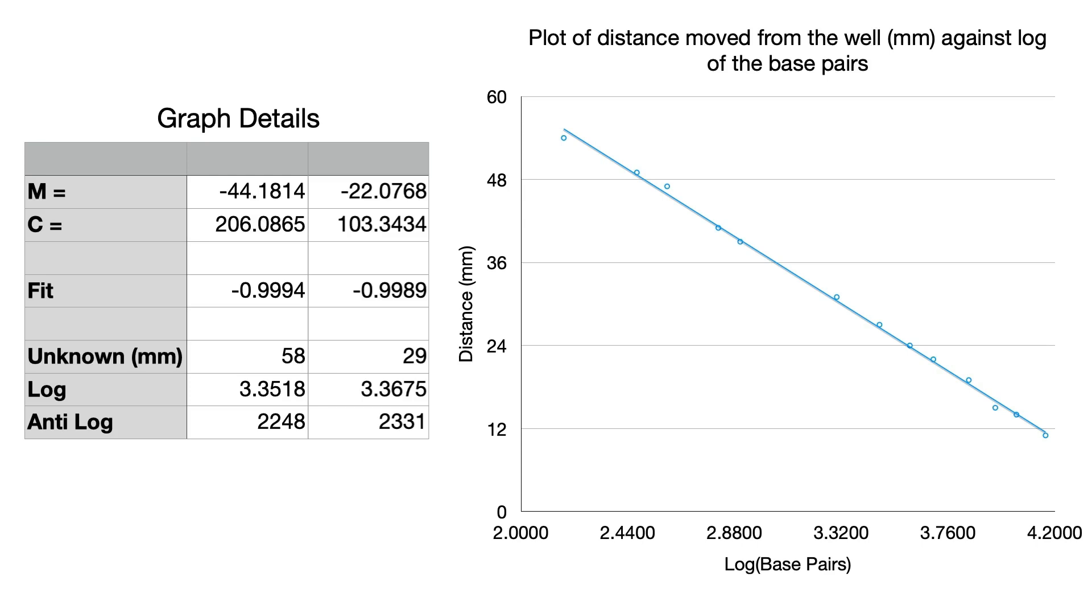And that comes out to 2331 base pairs, so 2300 base pairs which is very very close to the original value that we had of 2200. So the size of the gel doesn't really matter in this case.